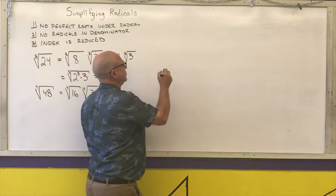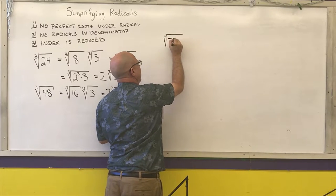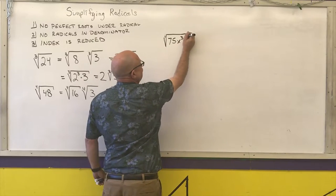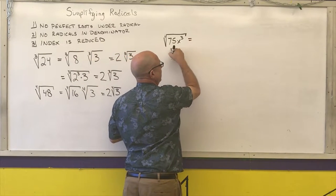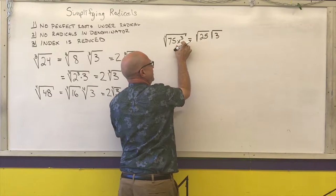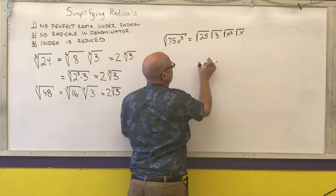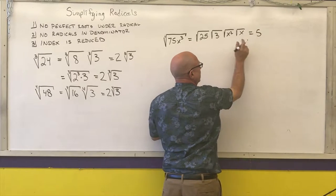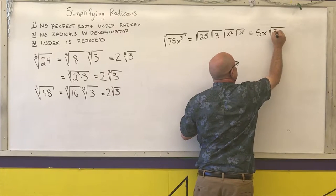The next example is the square root of 75x³. I want to break this down into things that have perfect squares so I can pull those out. 75 is the same thing as 25 times 3, and x³ is the same thing as x² times x. The square root of 25 is 5, the square root of x² is x, and I have the 3x left over underneath the radical, giving 5x times the square root of 3x.